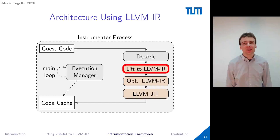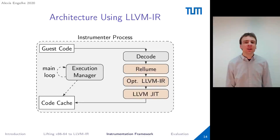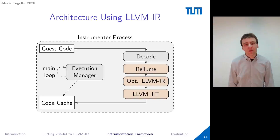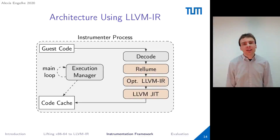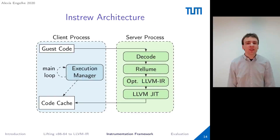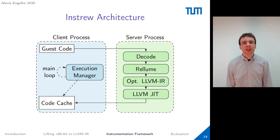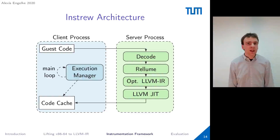Now that we have seen how to lift x86 machine code efficiently to LLVM IR using our new lifting library ReLU, we can turn to integrating this into an instrumentation framework. As a single address space containing both the execution manager and the lifter has some disadvantages, we made an important design decision to split the instrumentation process into two processes: the client process, responsible for managing execution and containing the code cache, and the server process, responsible for decoding, lifting, optimizing, and code generation. This architecture is implemented in our new instrumentation framework, which we call INSTRU.